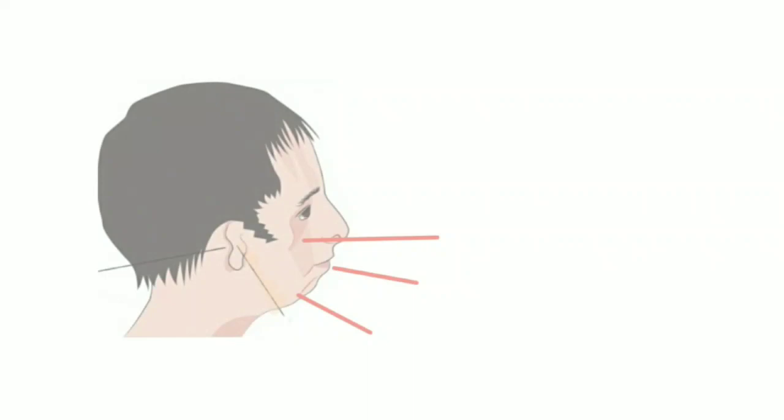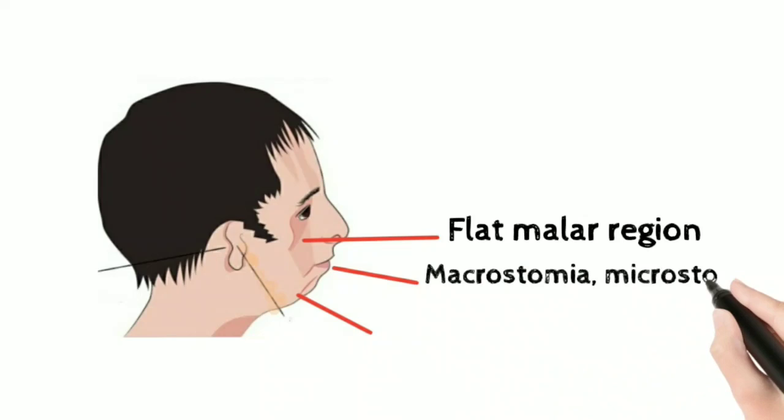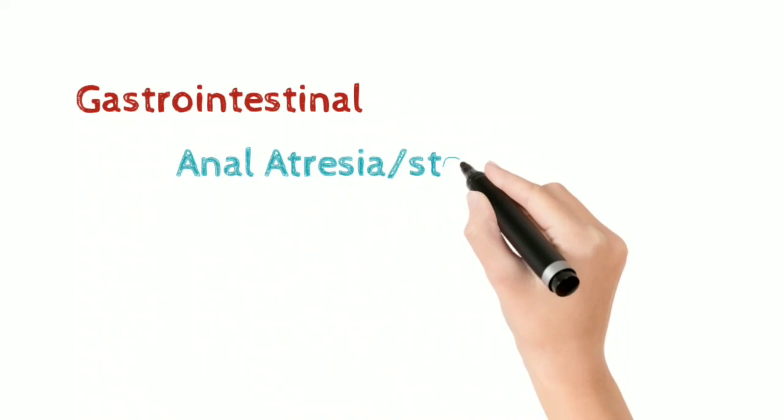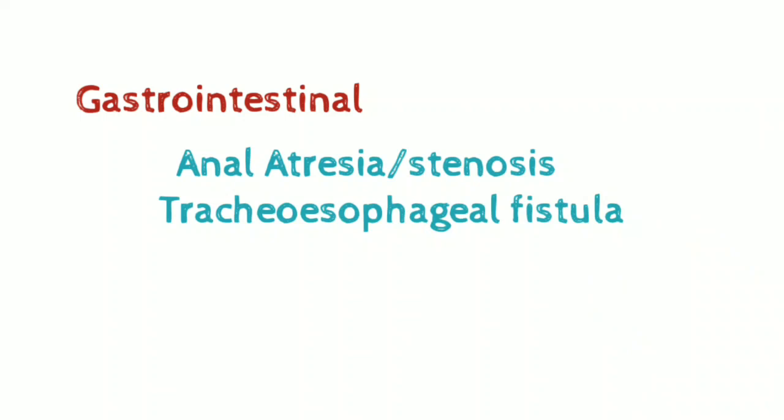Now let's look at the picture. There could be flat malar region, macrostomia, microstomia, and cleft palate. In the mandible region there could be hypoplasia of the mandible which causes retrognathia or micrognathia. The gastrointestinal and cardiovascular systems may also be affected. In the GI tract there could be anal atresia or stenosis, and tracheoesophageal fistula. Cardiac defects are also seen.